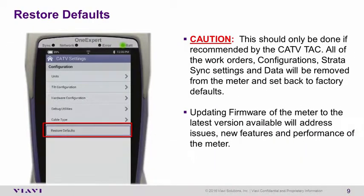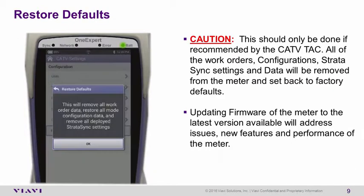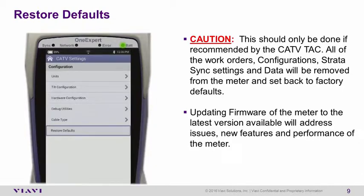Restore Defaults allows you to set the meter back to factory defaults. A warning screen is displayed when opening this parameter to remind you that all parameter setups and data stored on the meter will be removed. These are all the setups and parameters for configurations under CATV settings.